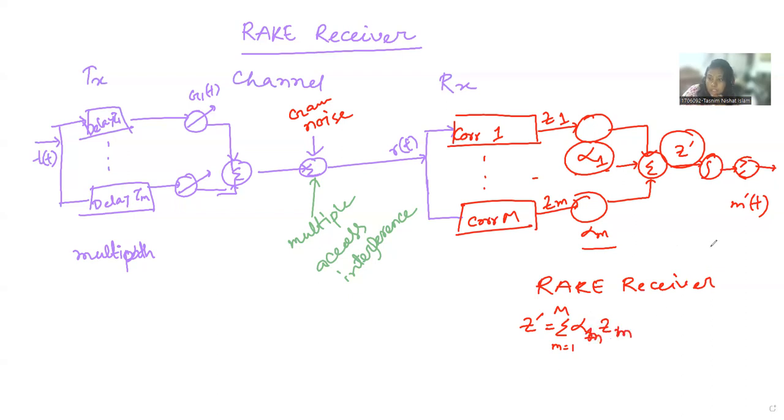And this is one definition. Another definition is what's alpha M. So these weights, alpha M is the weights. Weights are particularly defined as the correlator weight for each one. And our objective is to get the strongest path component from all the multiple paths we have.